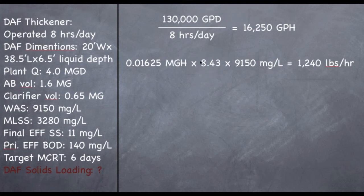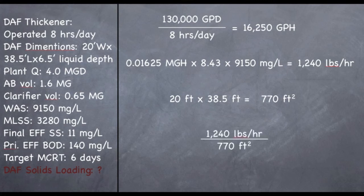So, we're getting really close. The last part of the formula is to find out the square feet, which is an area. So, we're going to ignore this liquid depth. It doesn't matter at all. We're going to take 20 feet wide by 38.5 feet long, which gives us 770 square feet. And all we're going to do now is simply divide 1,240 by 770, which will give us a grand total answer of 1.6 pounds per hour per square foot.